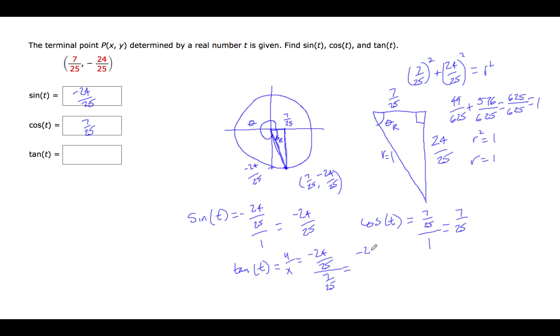Simplifying this, we'd have negative 24 over 25 times 25 over 7, since we invert and multiply when we divide with fractions. This would, of course, cancel the 25s, and this tangent, then, would be negative 24 over 7.